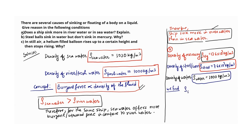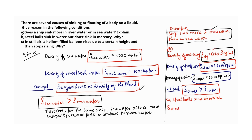We find density of steel is greater than density of water. So steel balls sink in water. And when we compare density of steel with density of mercury, we find density of steel is less than density of mercury.